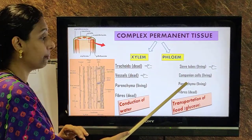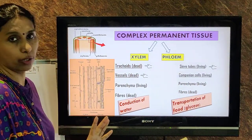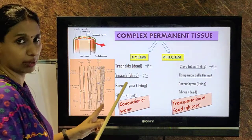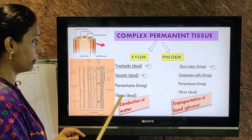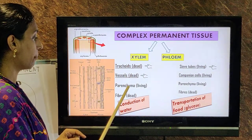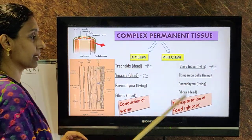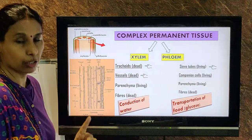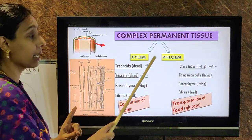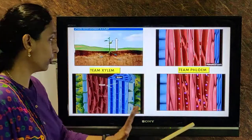Parenchyma helps in sideway transport or food storage, and fibres provide mechanical support. To summarize: xylem four elements — tracheids, vessels, parenchyma, and fibres. Tracheids and vessels are dead elements; parenchyma is living; fibres are dead. In phloem, only fibres are dead; all the other three elements are living. Remember: the only elements helping in transportation of water are tracheids and vessels; in phloem, it is the sieve tube doing the functioning of translocation of food.